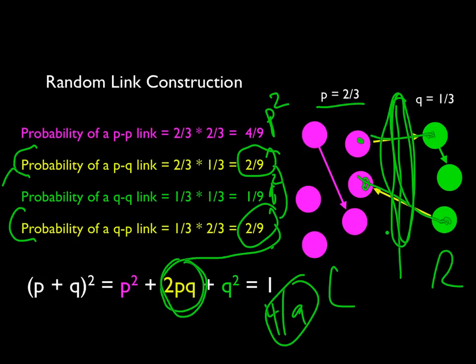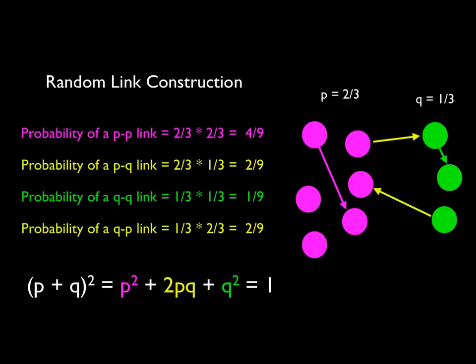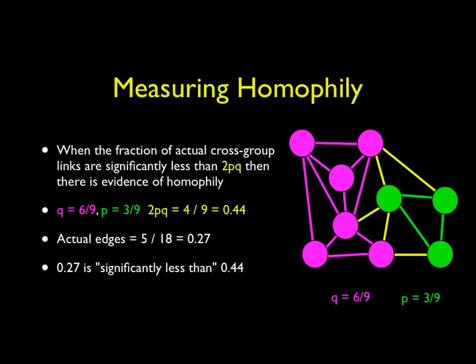This is just sort of the derivation of the closed form, the nice closed form. Now we can sort of skip all that, and we can generate the mathematical rule for when we detect homophily.